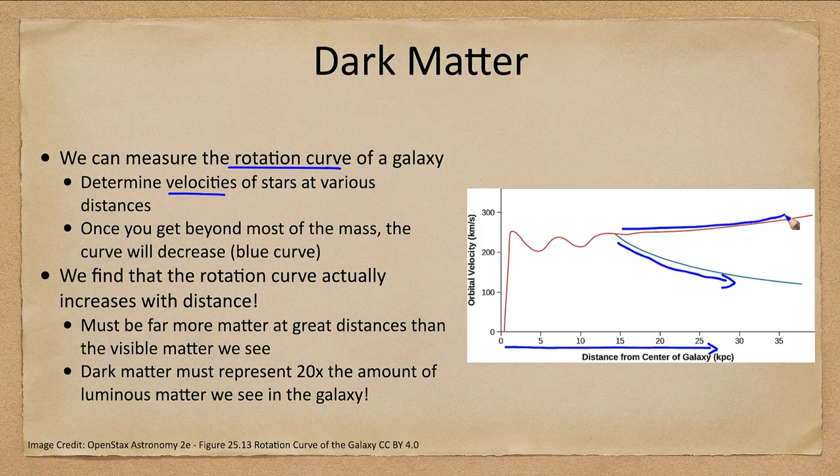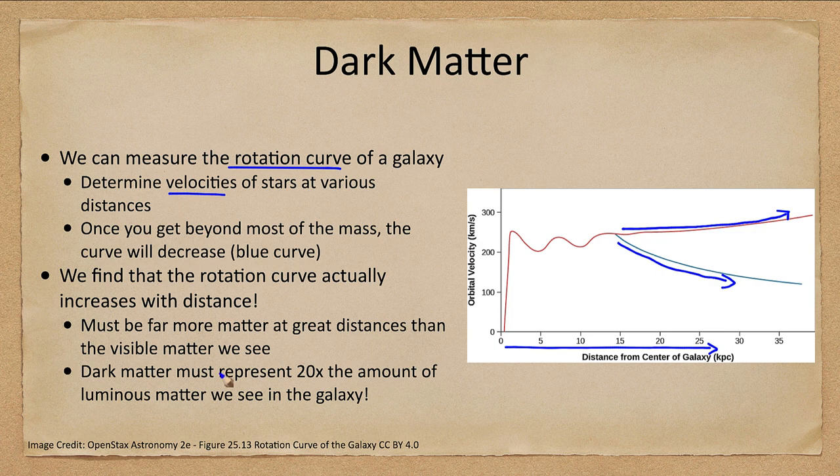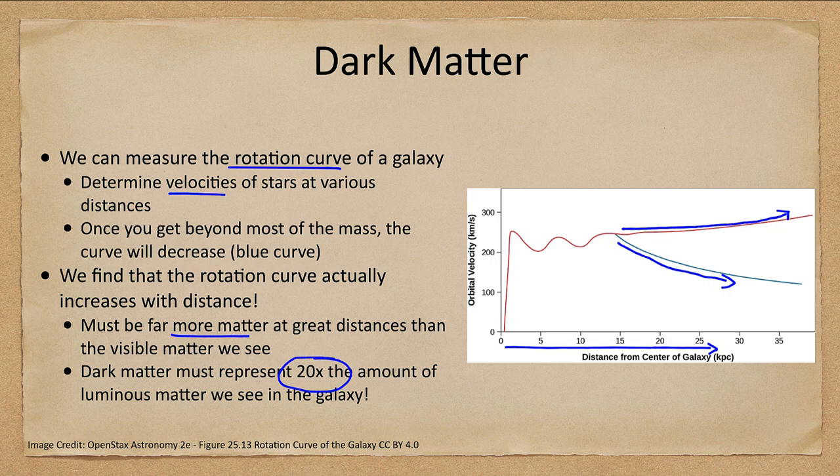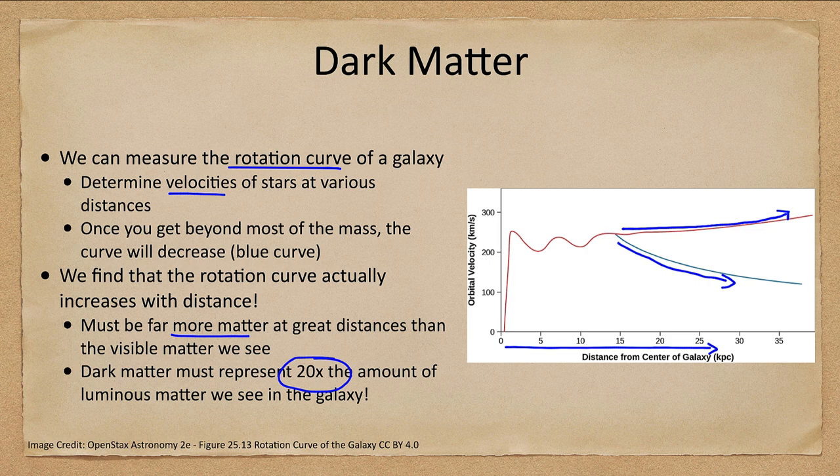So again, look at our scientific method—something's wrong here. Either we don't understand how gravity works at these large distances, or there has to be a lot more material out there. And how much more? It's a lot more: 20 times the amount of what we see in luminous matter. So for every star you see there's 20 stars worth of material, for every gas cloud there are 20 gas clouds worth of material out beyond the visible edge of the galaxy.